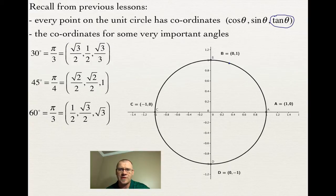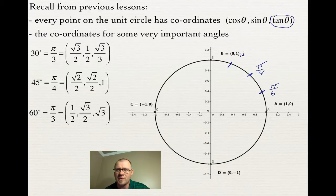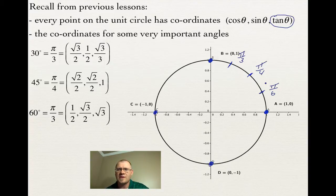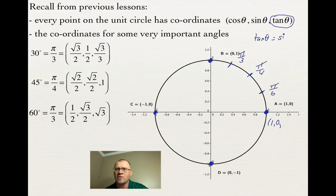Here's our unit circle with pi over 4, pi over 6, and pi over 3 marked. At the point (1, 0), cosine is 1 and sine is 0, so tan equals sine over cosine, which is 0 divided by 1, giving us 0. At the top, coordinates are (0, 1), so tan is 1 divided by 0, which is undefined.